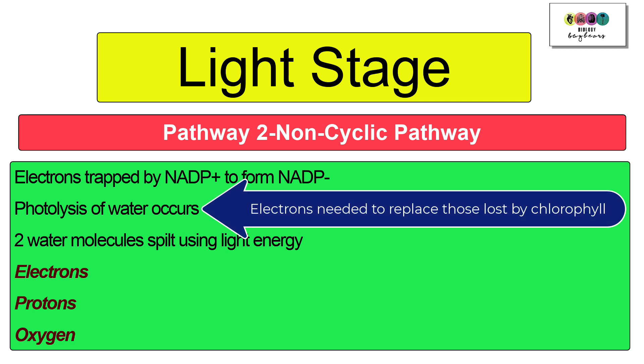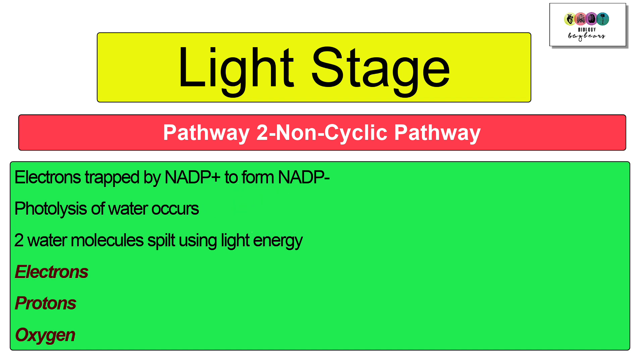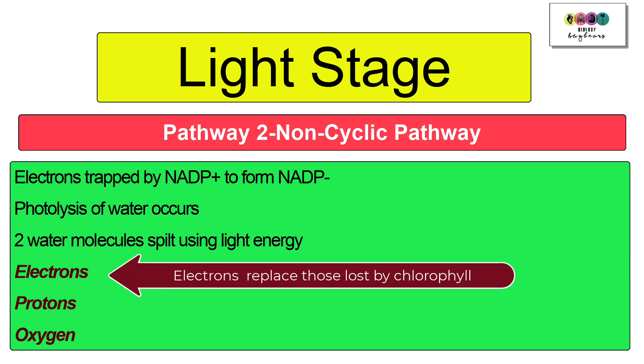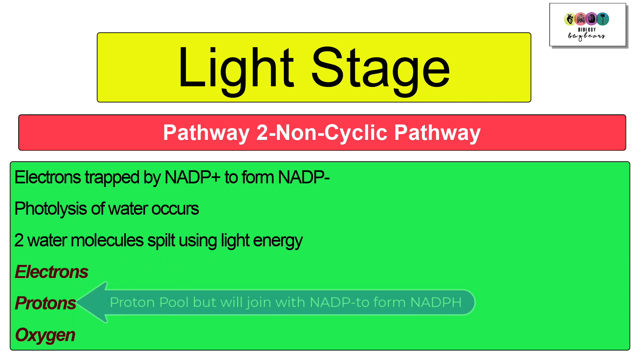Photolysis of water has to take place so water molecules have to be split using light energy and the reason for that is to replace the electrons that have not returned to chlorophyll. When you split water molecules you get electrons which go to replace those lost by chlorophyll, protons which go to a proton pool but will ultimately form NADPH,